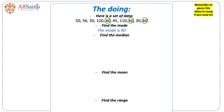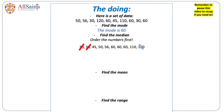To find the median you need to make sure your list is in ascending order, starting from the smallest to the biggest. Then you can cross off the numbers on either side of the list until you reach the middle. If you have one number in the middle that becomes the median, however in this example we have 2, so you need to add those numbers together and divide your answer by 2 to give you the median.